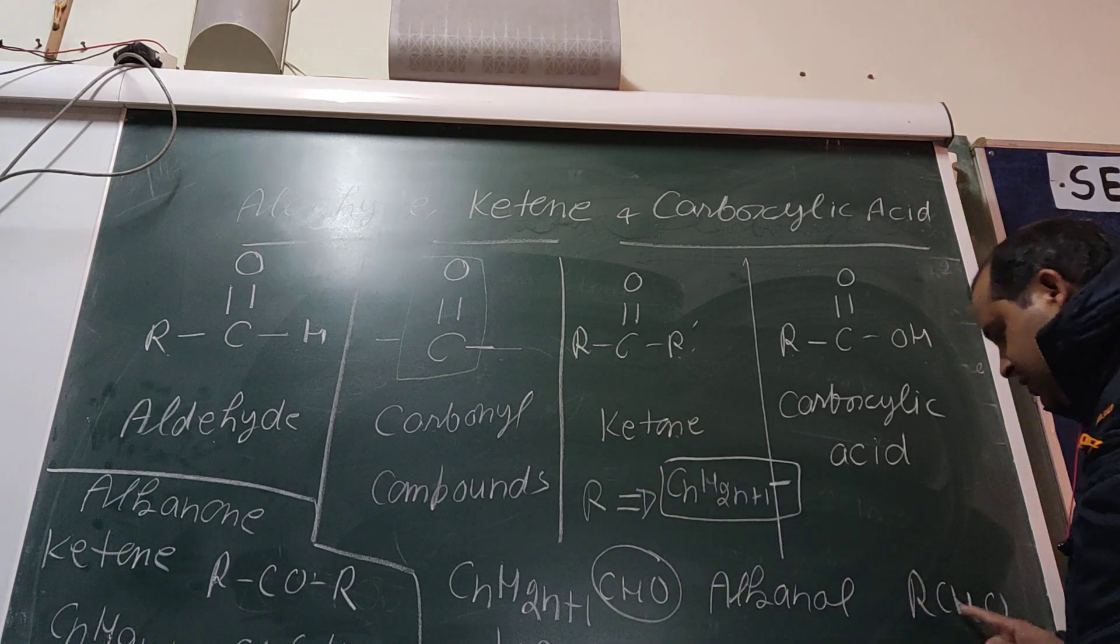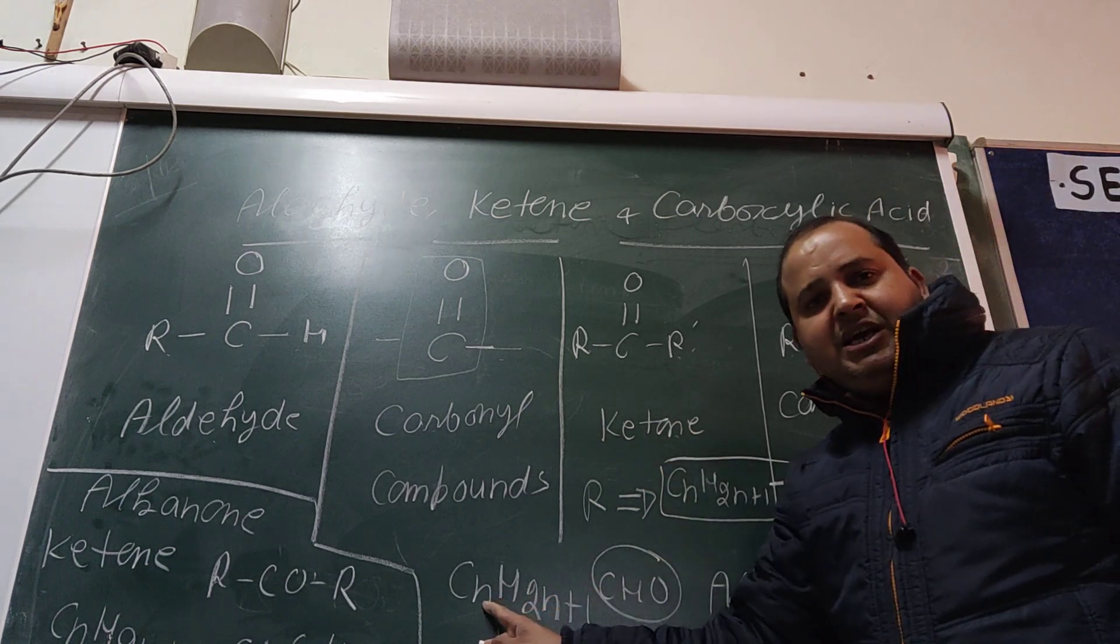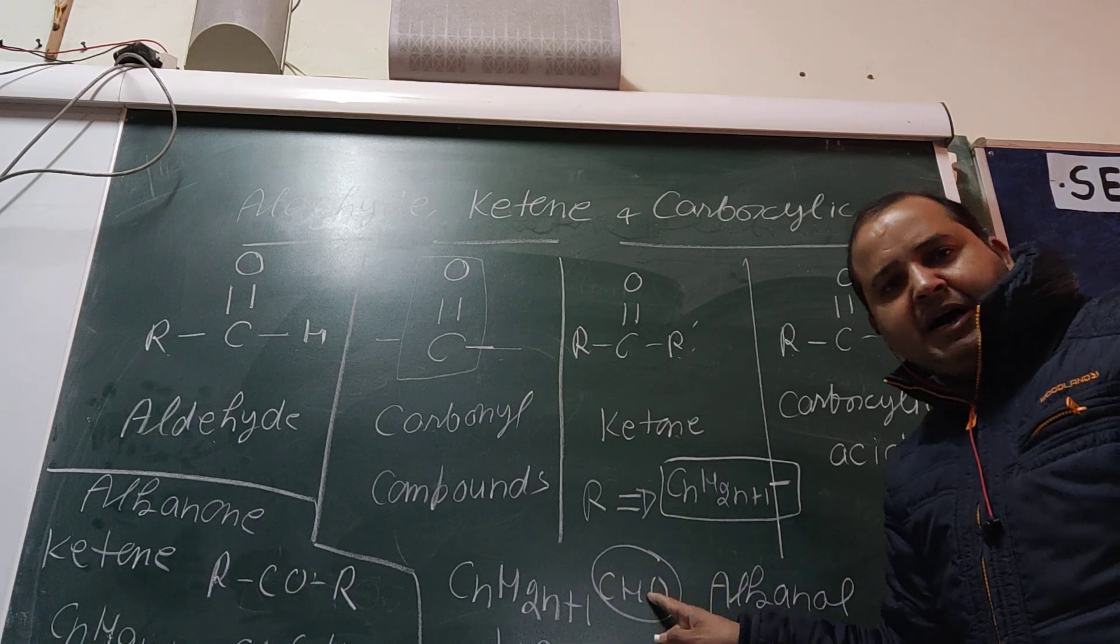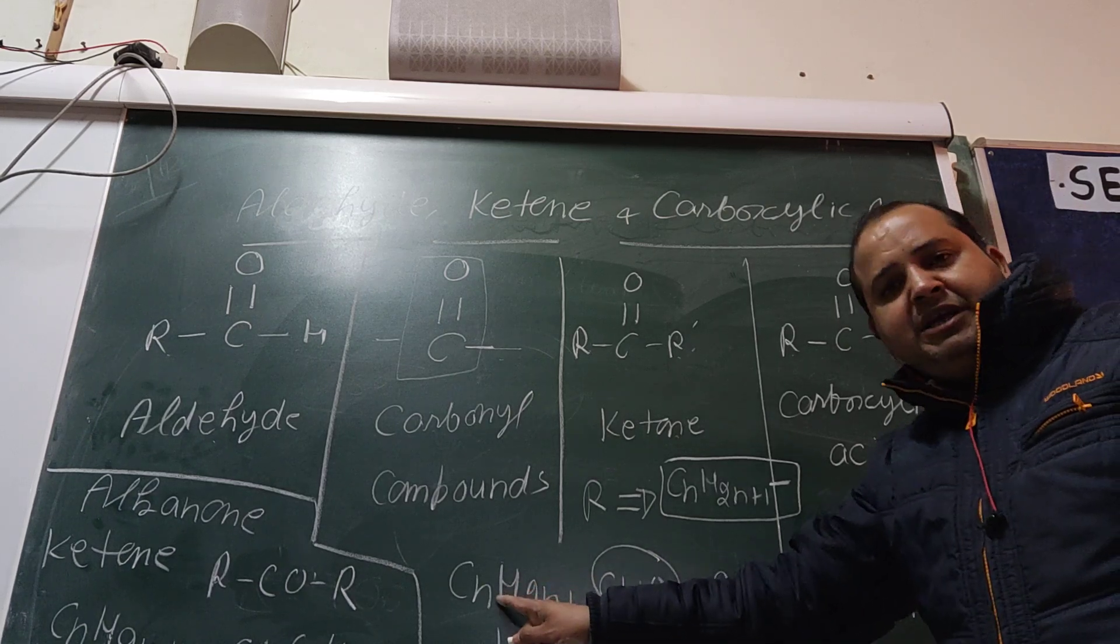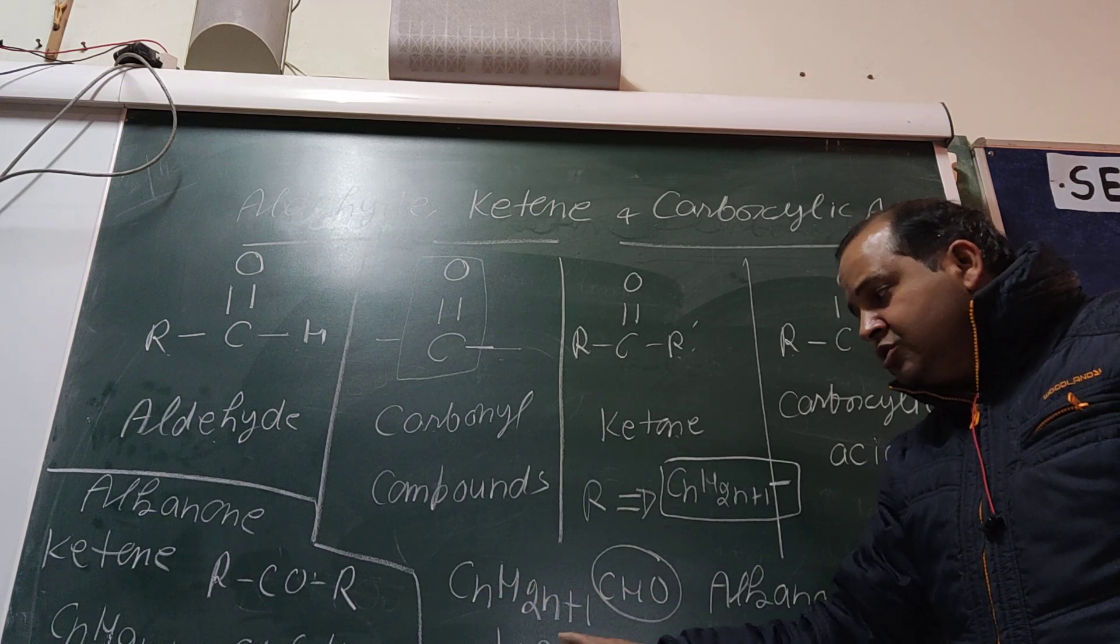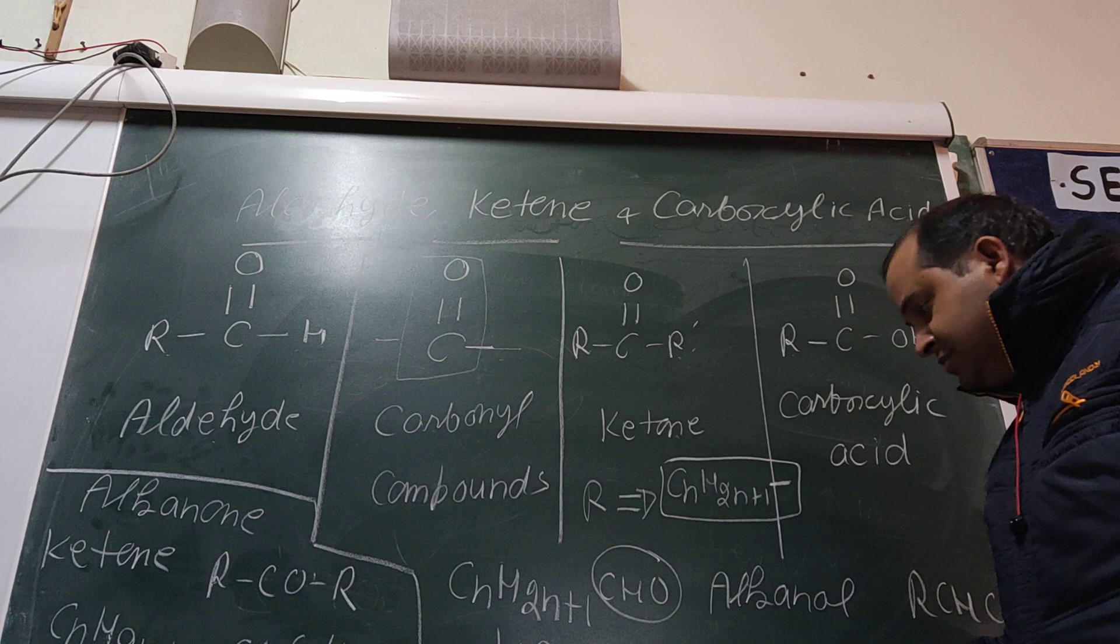this is R-CHO, so R is CnH2n+1-CHO. If the functional group contains carbon, the value of n can be taken as zero. So this becomes H-CHO. The common name is formaldehyde; IUPAC name is methanal. If n value is one, then CH3-CHO: ethanal or acetaldehyde.